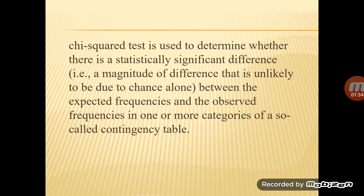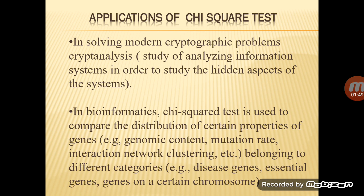The applications of the chi-square test include solving modern cryptographic problems, cryptanalysis, and bioinformatics. In bioinformatics, the chi-square test is used to compare the distribution of certain properties of genes belonging to different categories.